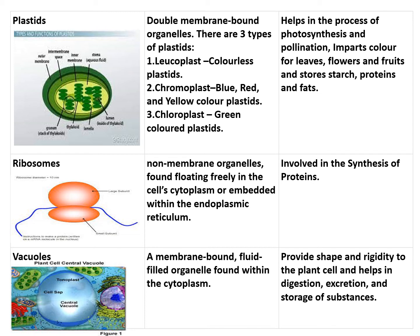Now we will discuss plastids, ribosomes, and vacuoles. Plastids are only present in plant cells, not in animal cells. They are double membrane-bound organelles and are of three types: leucoplast, chromoplast, and chloroplast. Chromoplast imparts color to flowers and fruits — for example, xanthophyll gives yellow color and carotene gives orange or red color. Leucoplast stores starch. Chloroplast traps solar energy for the process of photosynthesis. Together, plastids help in photosynthesis, pollination, imparting colorful leaves, flowers, and fruits, and storing starch, proteins, and fats.